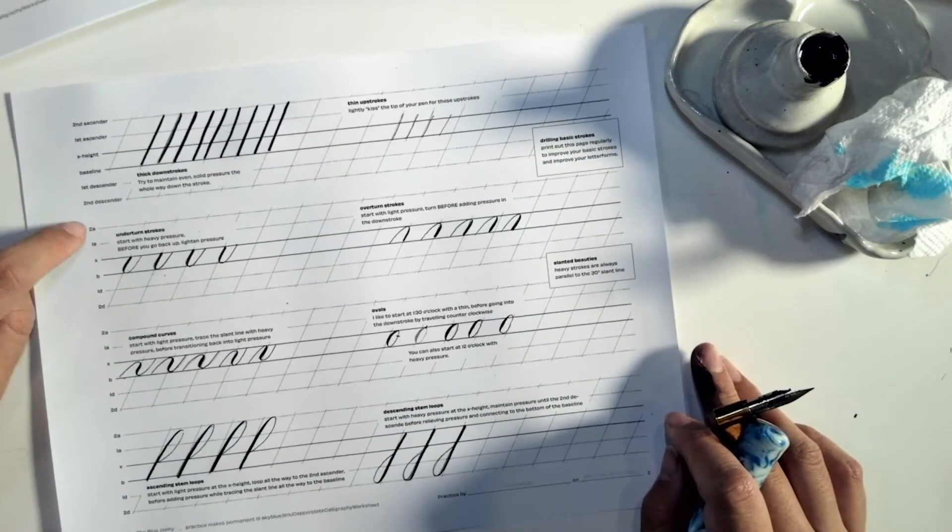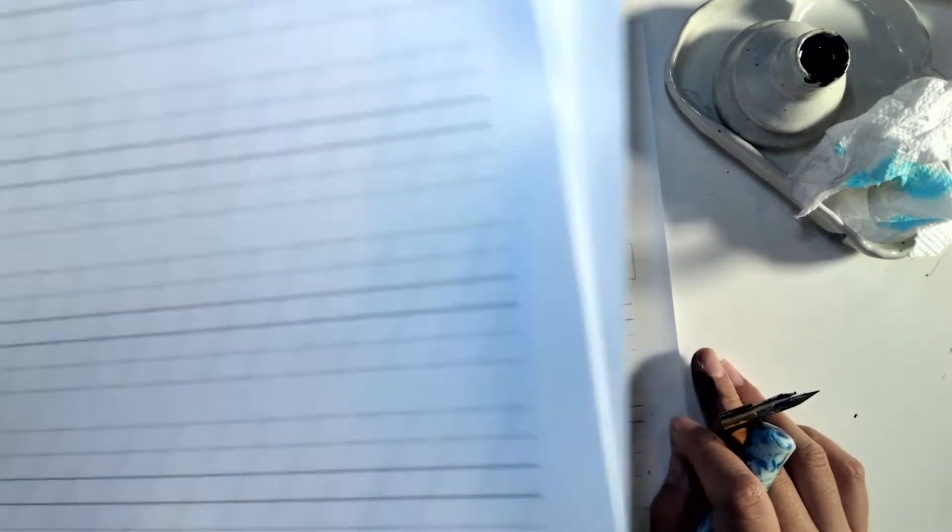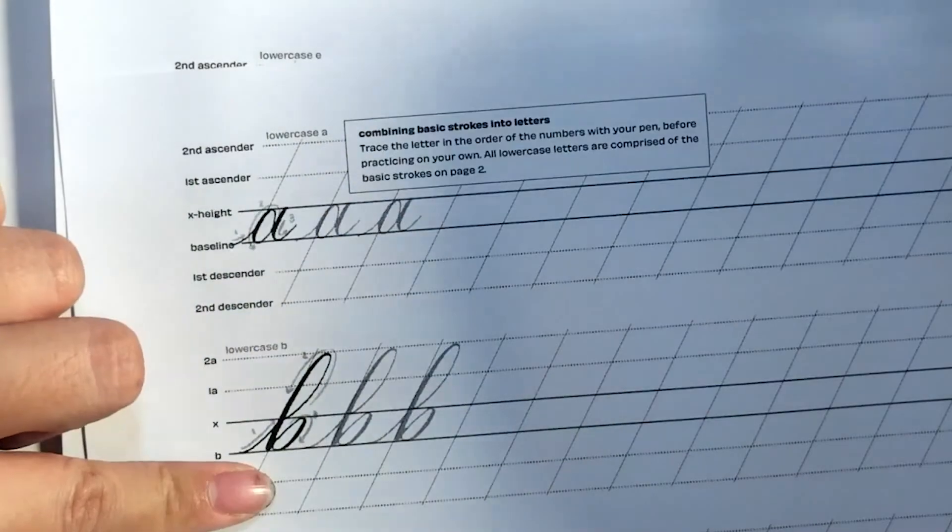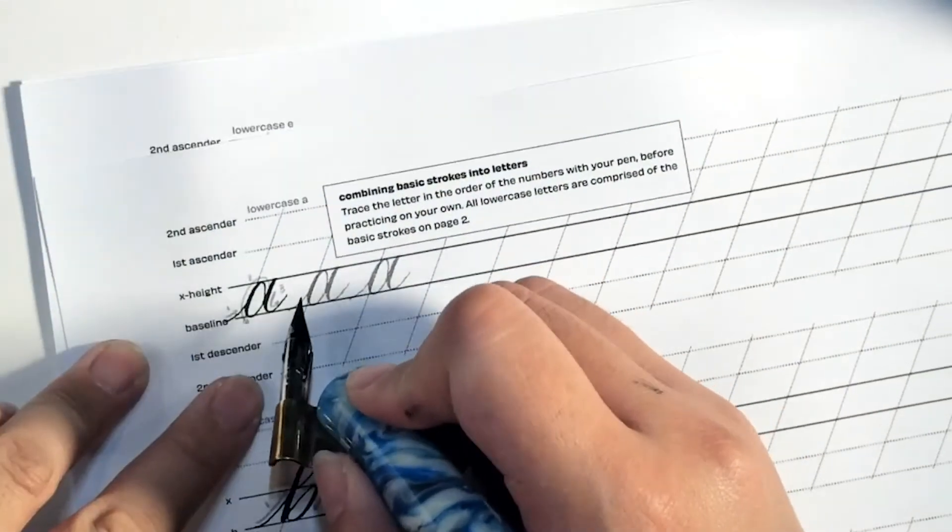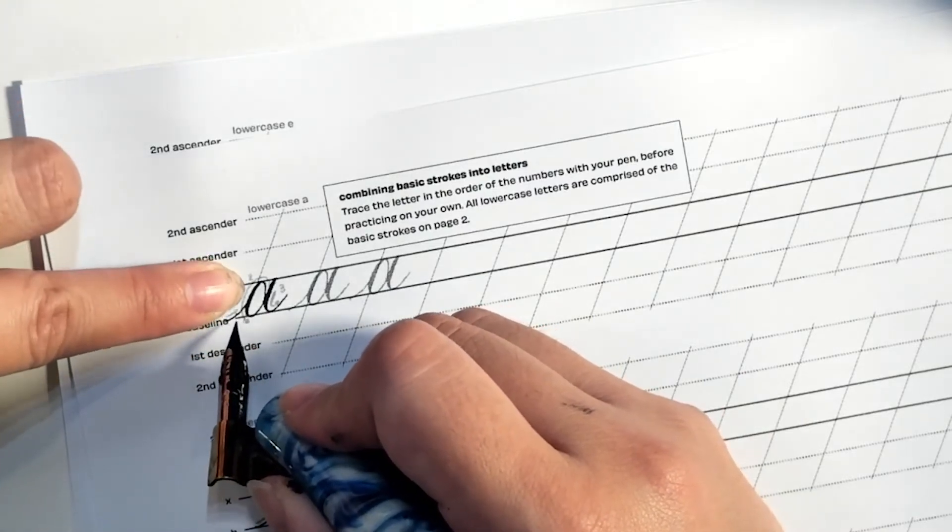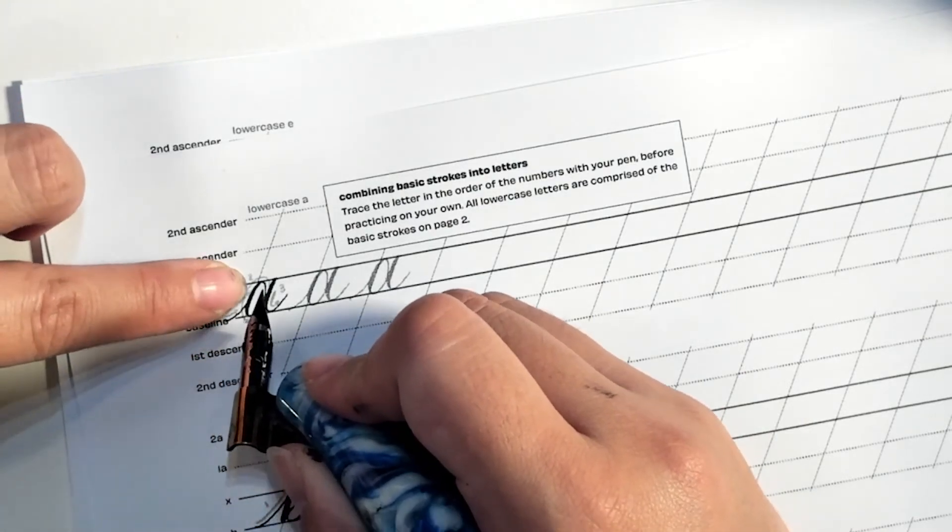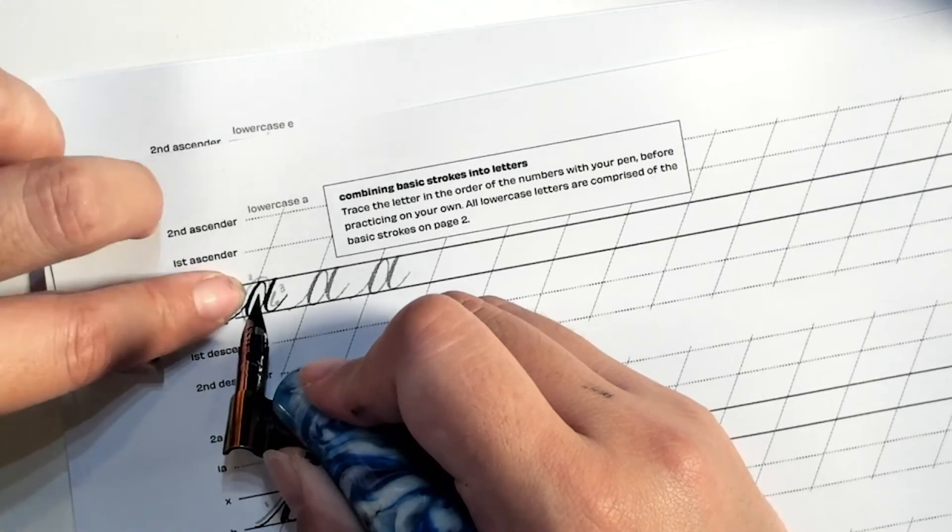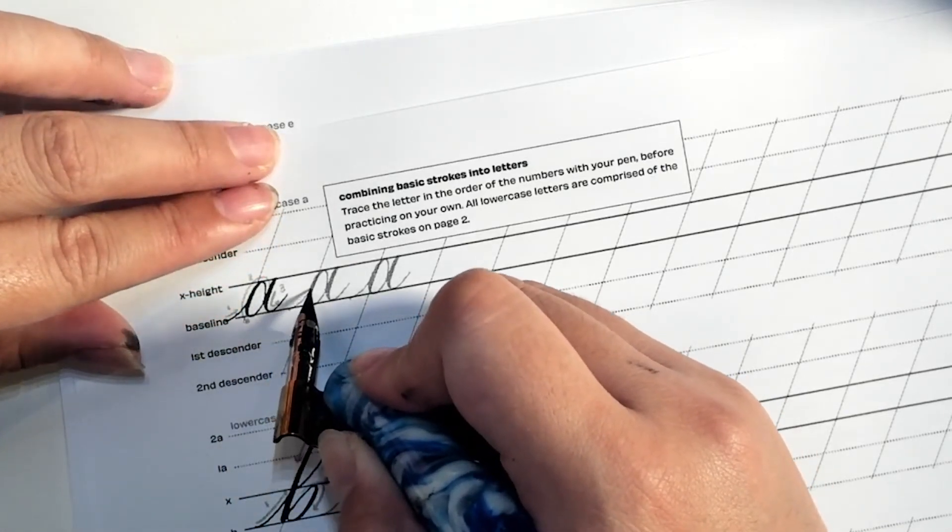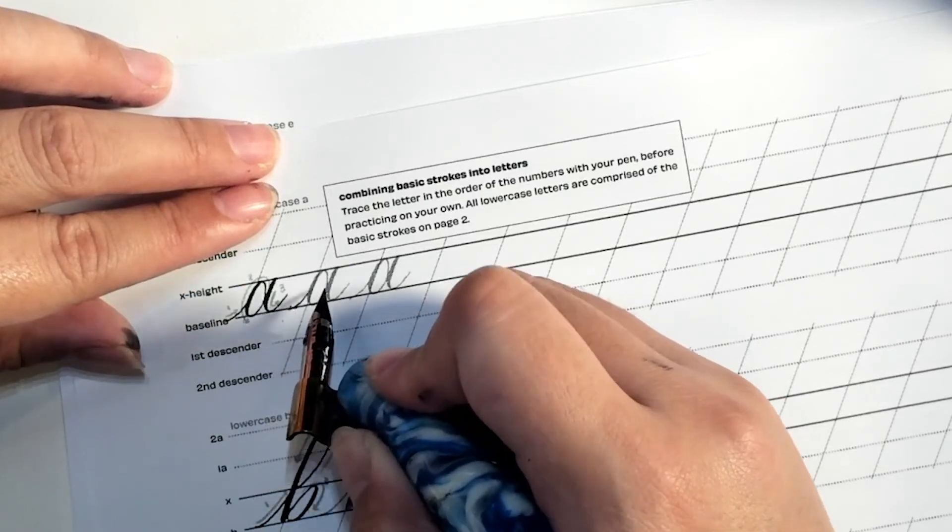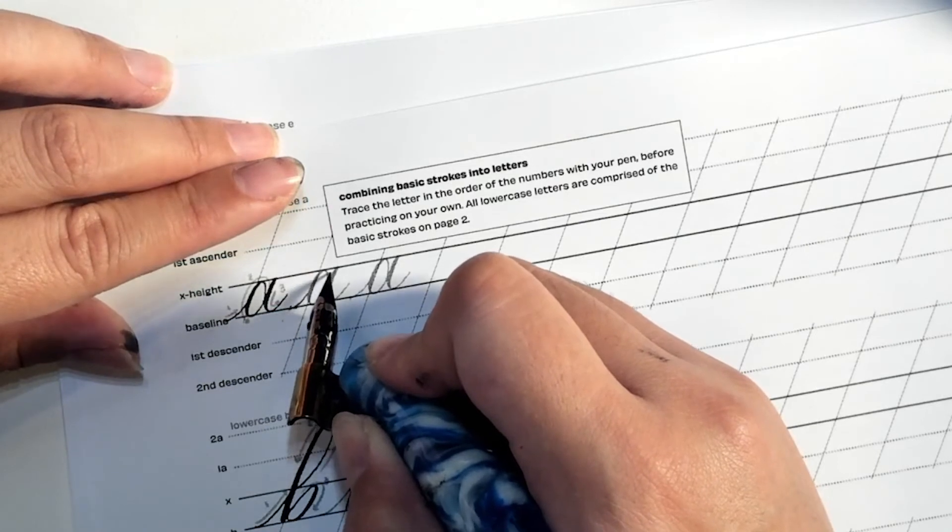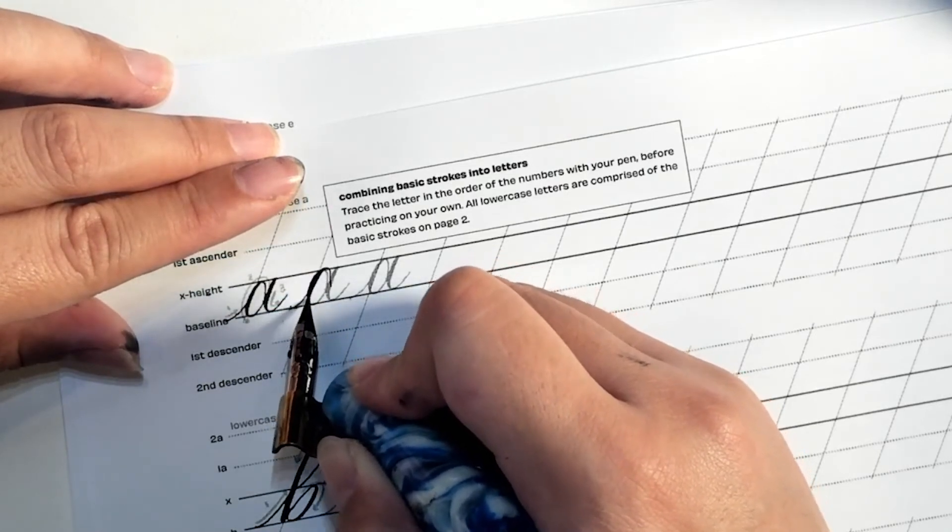If you nail these, you will nail all these letters. So you're going to trace the letters in the order and wherever there's light, wherever you have a thin line, that's going to be light pressure. And wherever you have a thick line, you add pressure. So you don't add any pressure going up into the stroke. And then from here, I like to start in here and then I go light and then add pressure going down and then go back up.